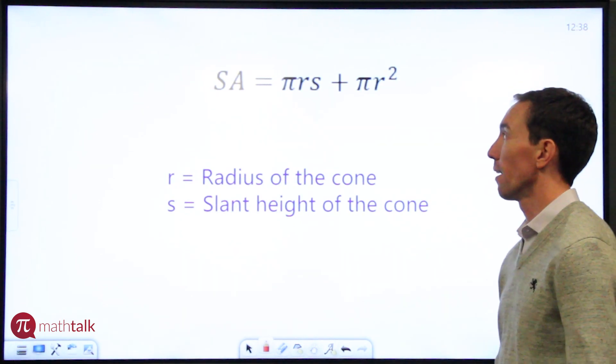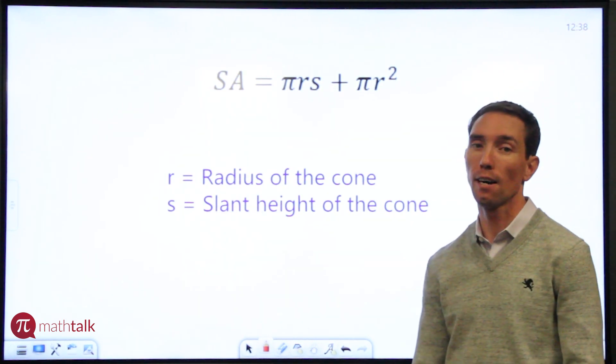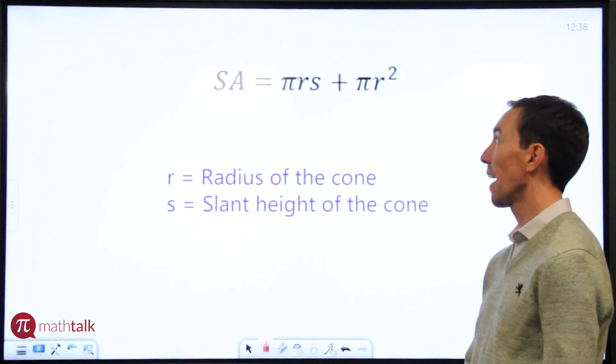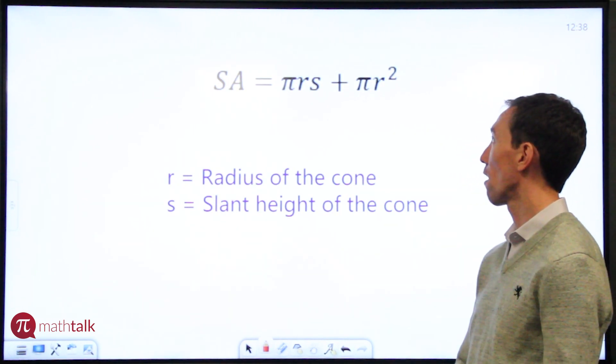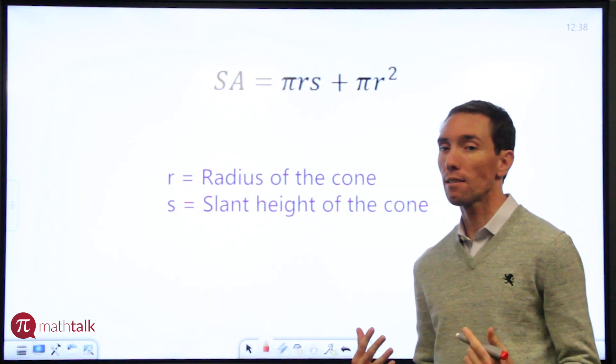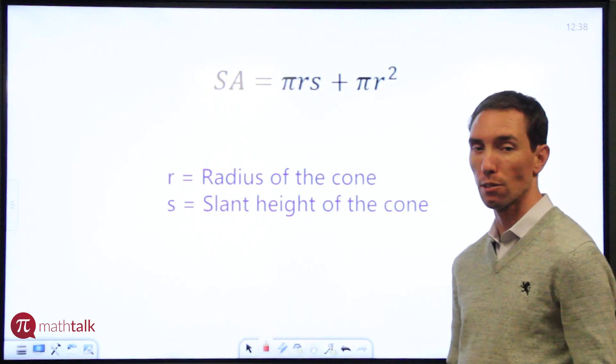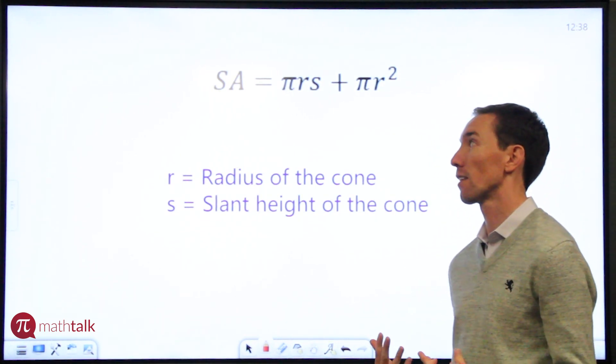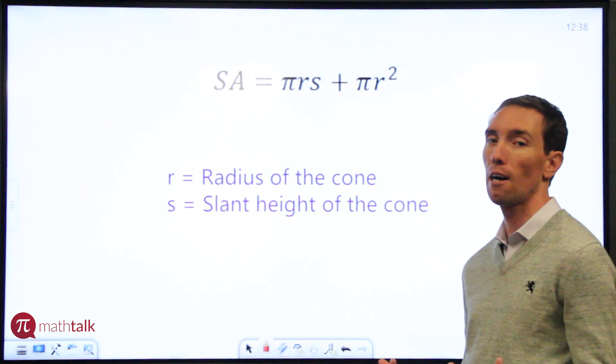So at the top of your screen you have the formula for the surface area of a cone. It says it's pi r s plus pi r squared. Similar to the formula for the surface area of a pyramid, there's a lot of different letters and symbols here. So let me break down what each of those means.